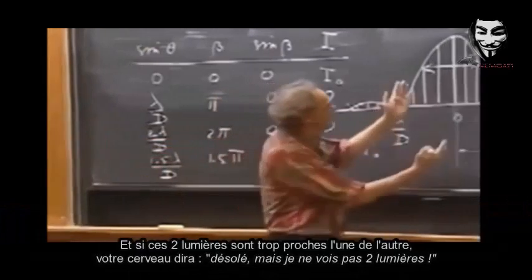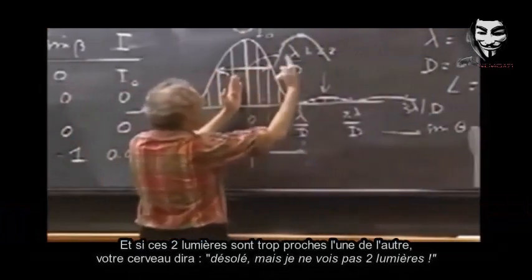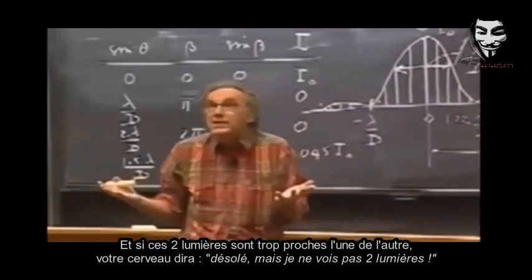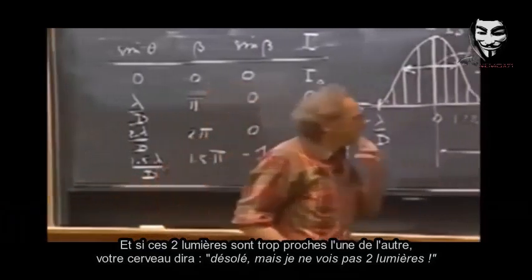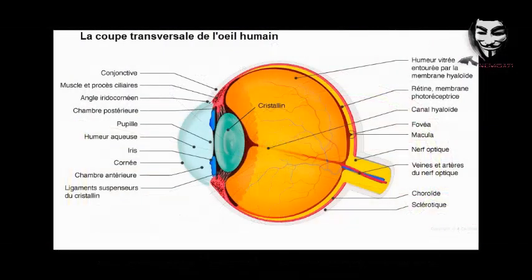And if those two lights are too close together, your brain will say, sorry, I don't see two lights.